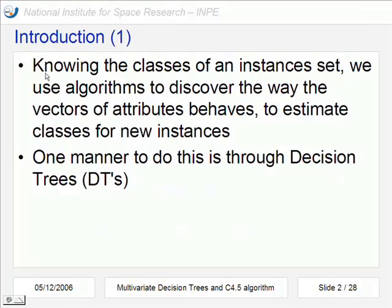We use a computer or an algorithm to discover the way that these attributes behave, to estimate classes for new instances that can be similar to those we already have. One way to do this is through decision trees, DTs.